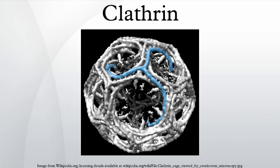A second clathrin heavy chain gene, on chromosome 22, is expressed in muscle. Clathrin heavy chain is often described as a leg, with subdomains representing the foot, followed by the ankle, distal leg, knee, proximal leg, and trimerization domains. The N-terminal domain consists of a seven-bladed beta-propeller structure. The other domains form a superhelix of short alpha helices. This was originally determined from the structure of the proximal leg domain, which is composed of a smaller structural module referred to as clathrin heavy chain repeat motifs.